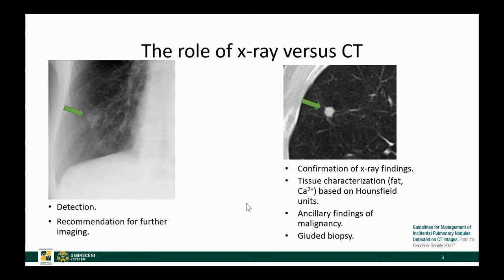Further imaging usually means a chest CT. With chest CT we can confirm whether it was a true pulmonary nodule or just a skin lesion or a rib lesion. We can further characterize the lesion by measuring the density within the nodule to diagnose fat or calcification. If it's a malignant type of nodule, we might also detect ancillary findings of malignancy like pleural effusion or lymphadenopathy, and of course with CT we can guide biopsy.